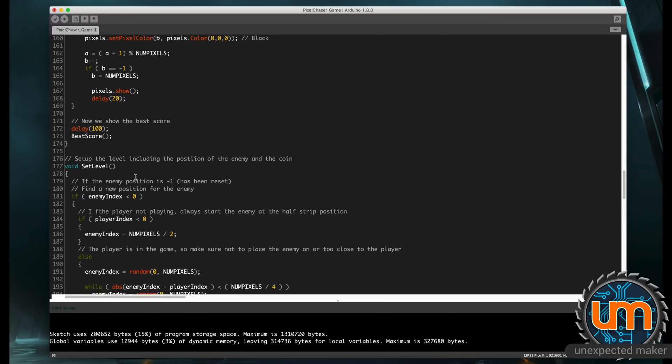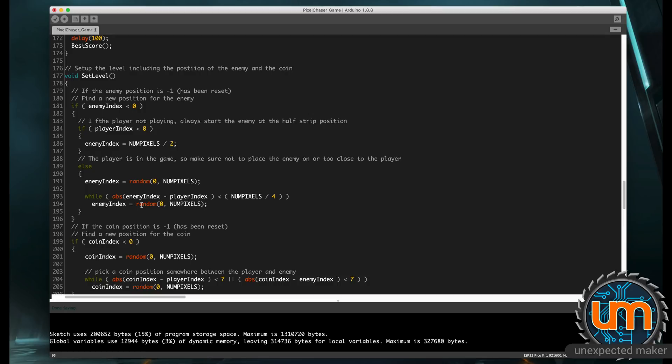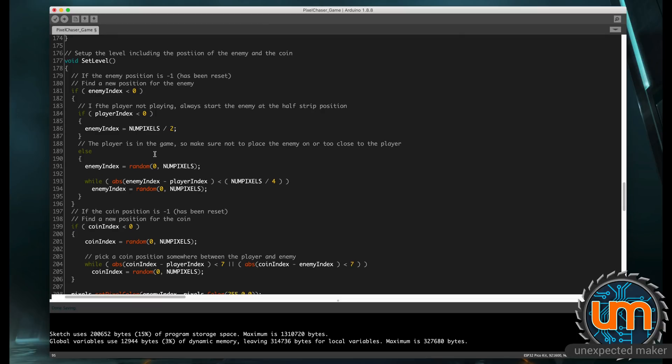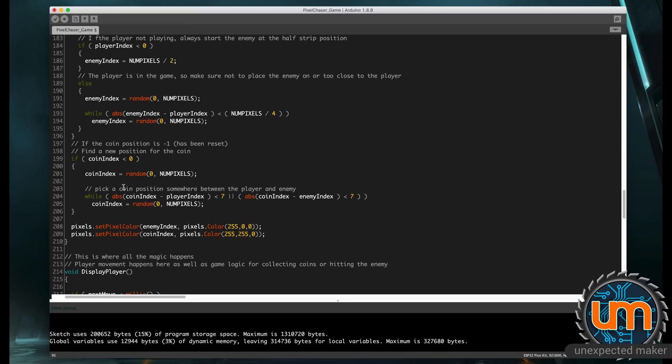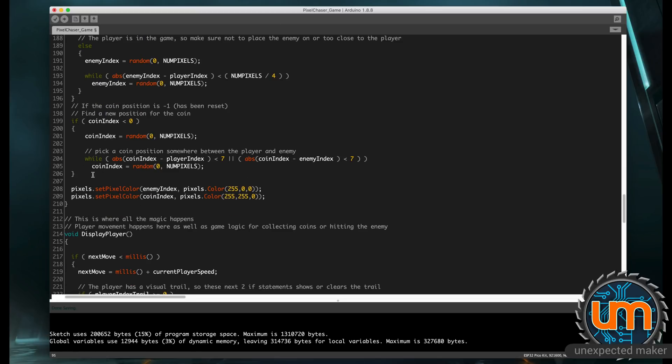The setup level basically runs every cycle and does nothing if either of the enemy or the coin has already been set on the level. But if there's no enemy in the level, it goes through and picks a position for the enemy. If there's no coin in the level because the player has picked up a coin, it finds a new place and places a new coin, and then it updates the position of these two.